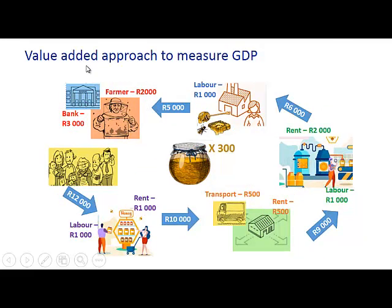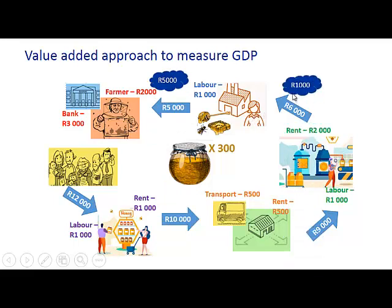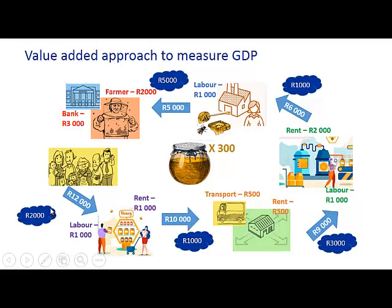Using the value added approach: the farmer added 5,000 rand of value; the person who separated the honey from the honeycomb added 1,000 rand (6,000 minus 5,000); the factory that bottled the honey added 3,000 rand (9,000 minus 6,000); the wholesaler added 1,000 rand; and the retailer added 2,000 rand. Adding all these values together, we once again get the same answer of 12,000 rand added to GDP.